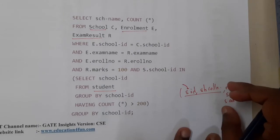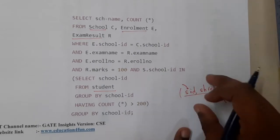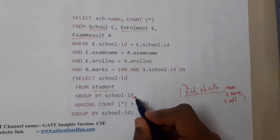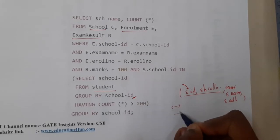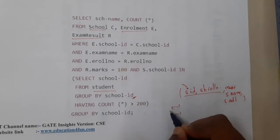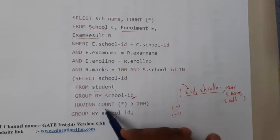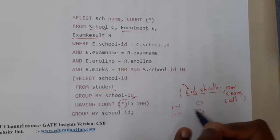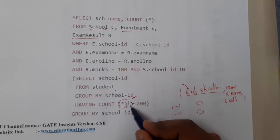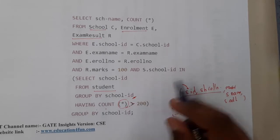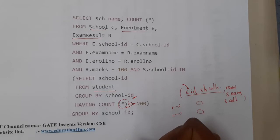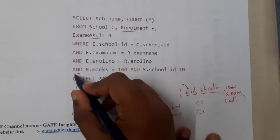There are multiple students in a single school, so we are combining them all using GROUP BY school ID. Then we check with HAVING COUNT, selecting only the schools which have greater than 200 students. That is the inner subquery.